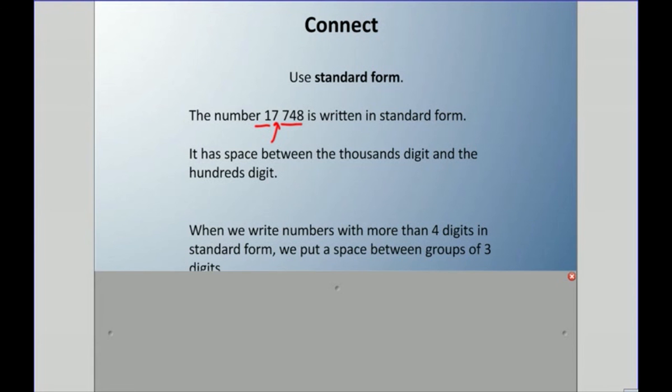We actually call each group of three numbers a period. That's kind of a strange term, but it's called a period. Now we only do that if we have more than four digits. So if you were writing the number 2,000, you don't actually need to put that space in. But when you do add another digit, like 17,000, you try and put that space in.